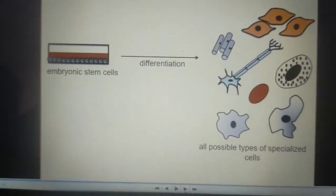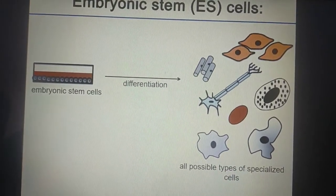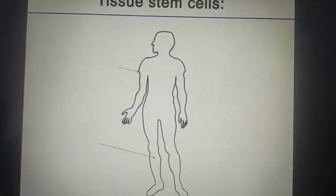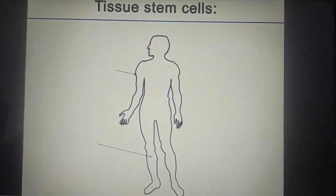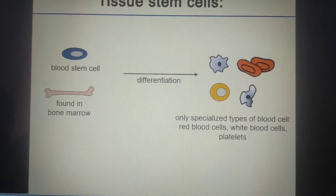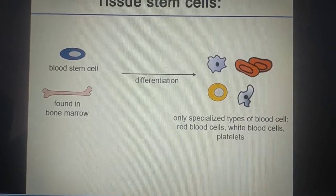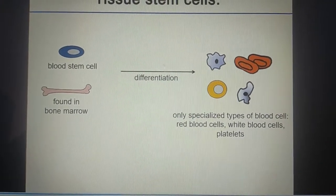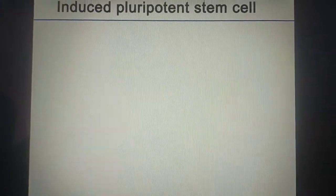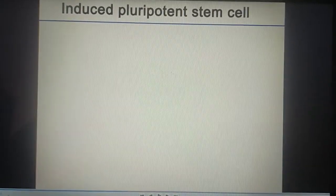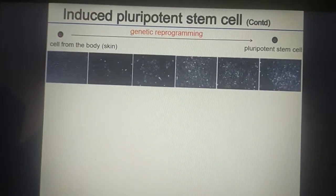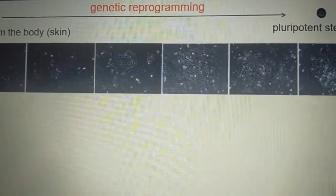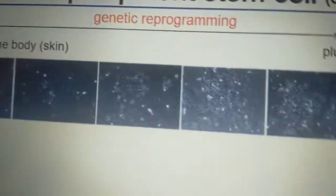Sources of stem cells include: embryonic stem cells, which can differentiate into all possible types of specialized cells; tissue stem cells such as blood stem cells found in bone marrow, which differentiate into only specialized blood cell types — red blood cells, white blood cells, and platelets; and induced pluripotent stem cells derived from body cells such as skin.